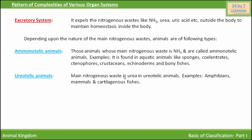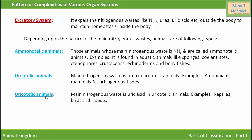Examples of ureotelic animals include amphibians, mammals, and cartilaginous fishes. Next are uricotelic animals — those whose main nitrogenous waste is uric acid. Their examples include reptiles, birds, and insects.